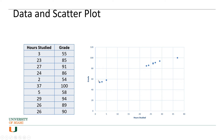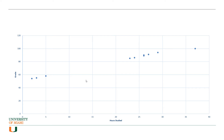The first point — three hours studied and a grade of 55 — corresponds to x equals 3 and grade equals 55. Let's enlarge this scatter plot. It seems like there is a linear relationship between hours studied and grade, in the sense that you can draw a line through these points that explains the relationship pretty well.